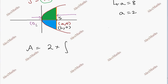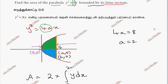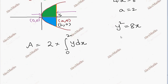The left extreme is at (0, 0). Looking at the limits, we integrate from 0 to 2, using the formula for area as the integral of y dx. From y² = 8x, we get y = √(8x). So we take the square root of 8x.